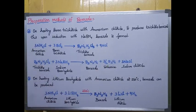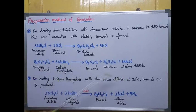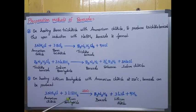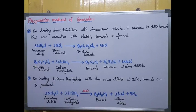The third method of preparation uses lithium borohydride and ammonium chloride at 230 degrees centigrade. This is an important laboratory method for preparing borazole. Three molecules of ammonium chloride react with three molecules of lithium borohydride at 230 degrees centigrade to produce borazole, along with lithium chloride and nine hydrogen molecules as byproducts. These are the methods of preparation of borazole.